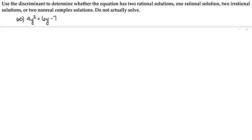We're going to use the discriminant to determine whether the equation has two rational solutions, one rational solution, two irrational solutions, or two non-real complex solutions — and we're not actually going to solve. In number 60 we have 4y squared equals 6y minus 7.